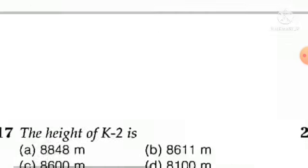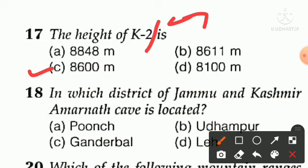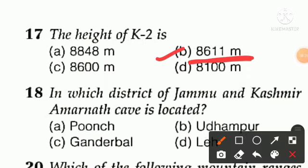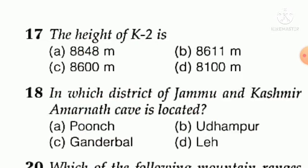Question number seventeen: the height of K2 (also called Godwin-Austin). Option B is right — that is 8611 meters. This is the height of K2. Mount Everest is approximately 8848 meters. So K2's height is 8611 meters.